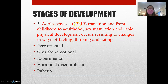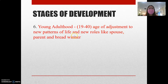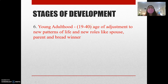Adolescence covers ages 13 to 19 years old. What comes after adolescence is young adulthood, from 19 to 40 years old. This is the age of adjustment to new patterns of life. After graduating, one focuses on other aspects of life, while age mates start building their own families — taking on roles of being a spouse, a parent, and the breadwinner of the family.